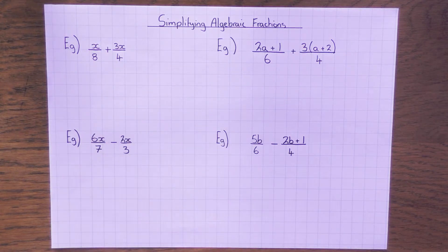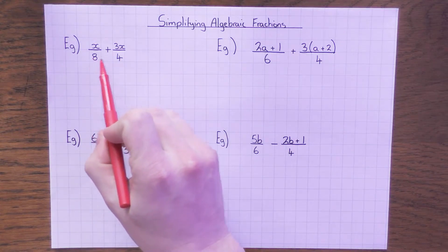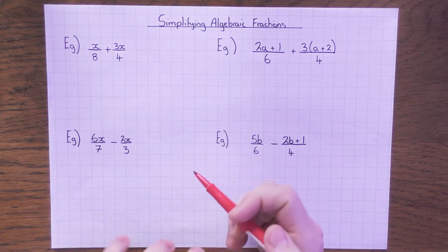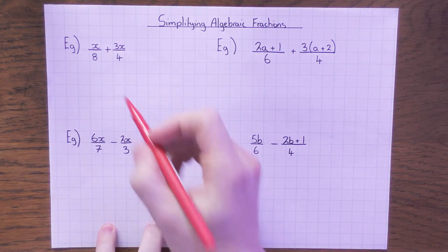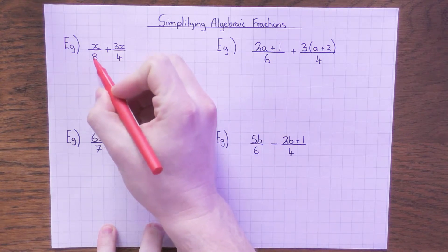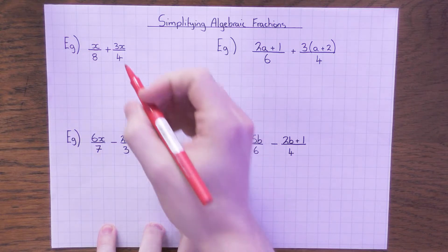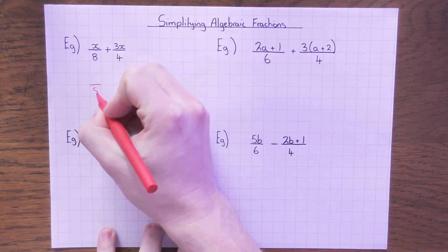Let's start off with this first one — we're going to add this fraction with this fraction. We still follow the rules of adding fractions that we would normally do; we have to make the denominators the same. If I look at 8 and 4, what is the lowest common multiple? Well, 8 is in the 8 times table, and 4 is in the 8 times table, so I can change my denominators to both be 8.